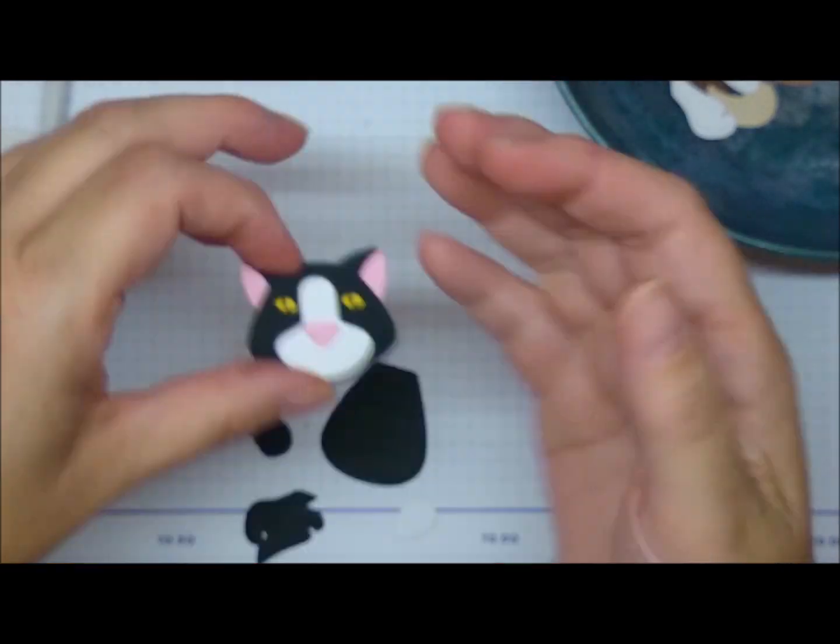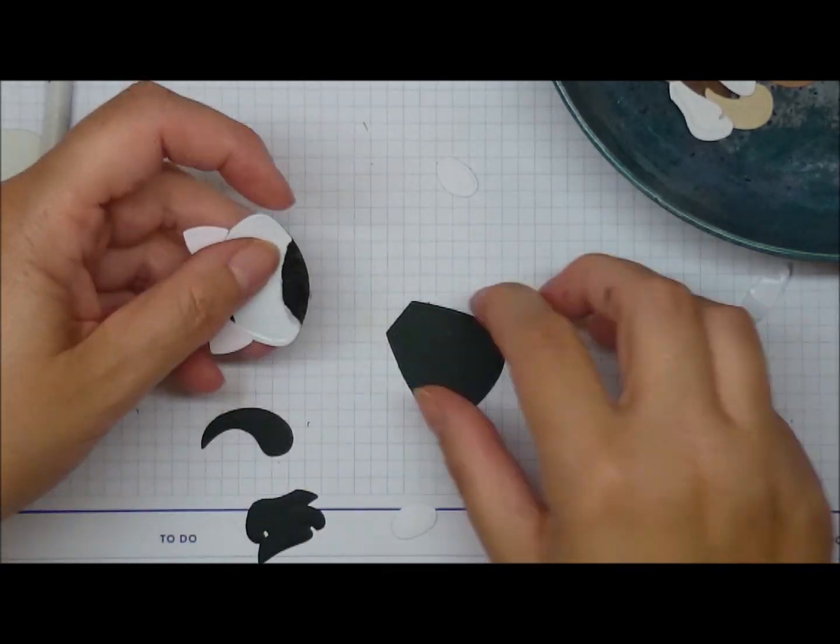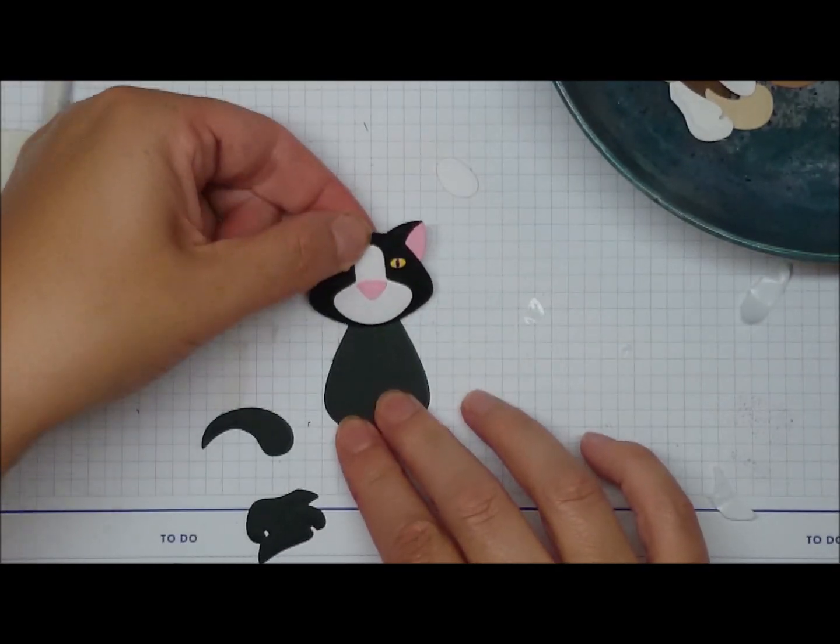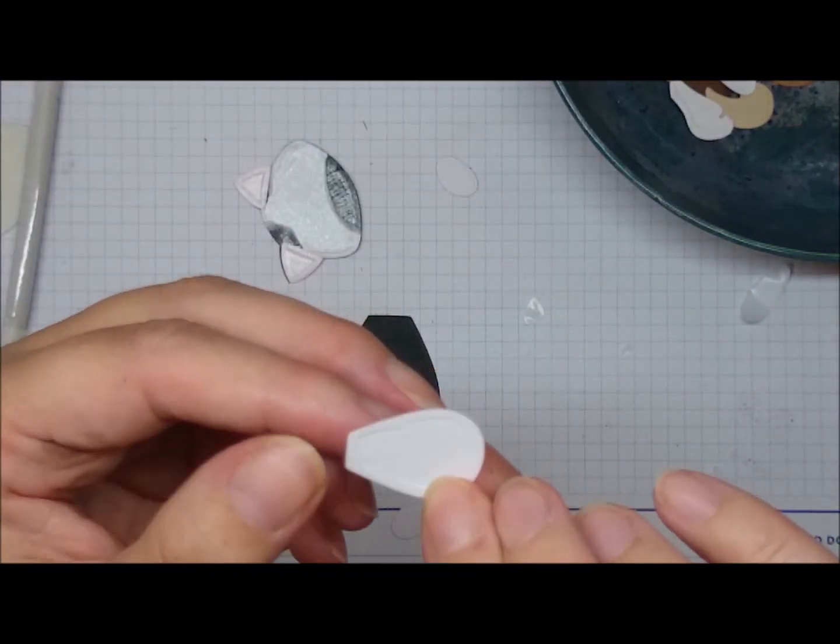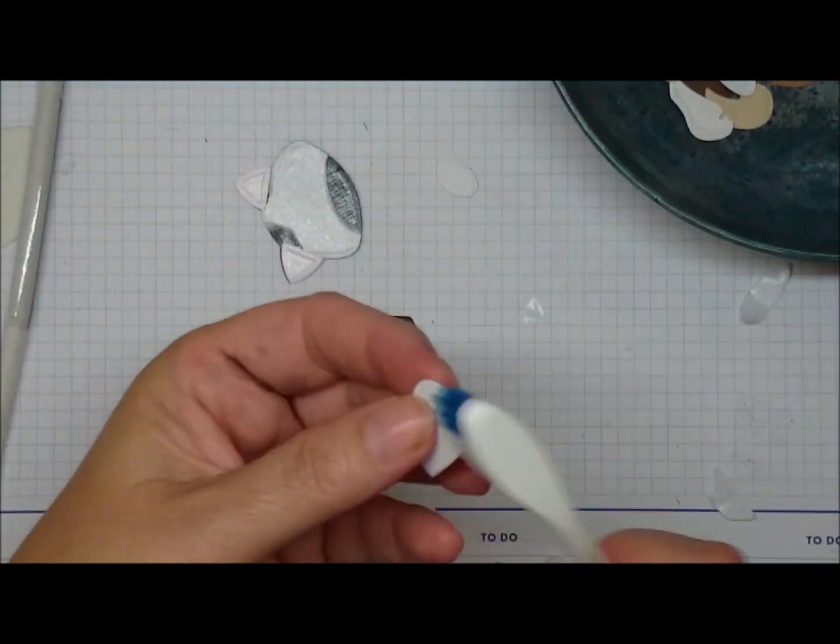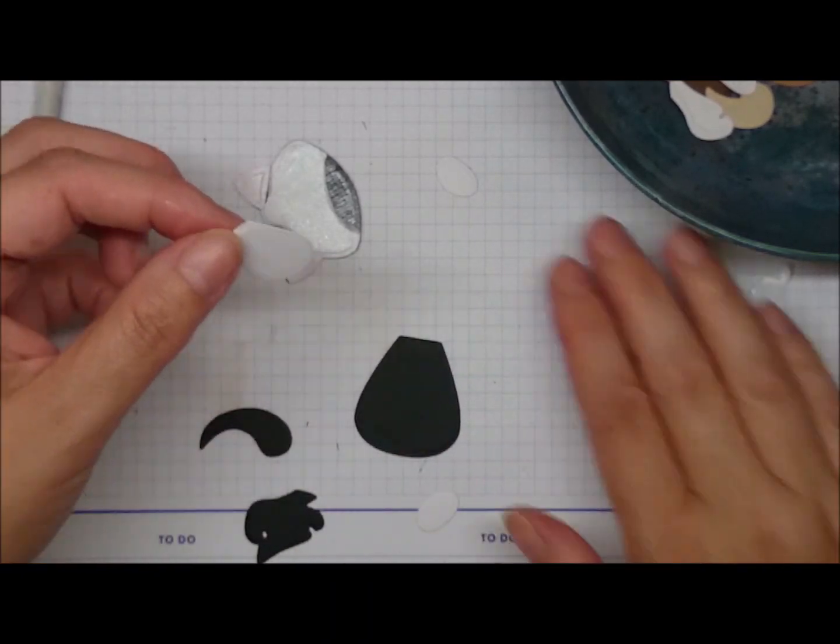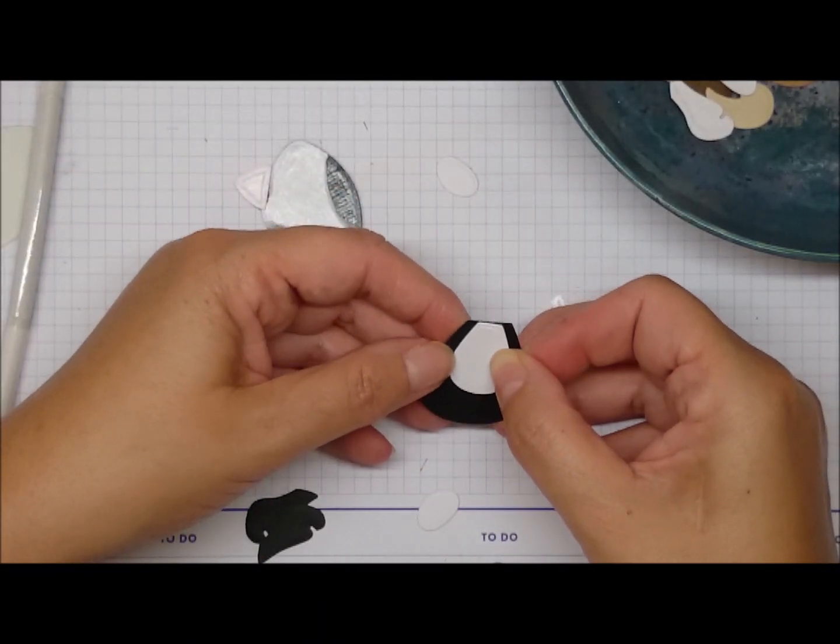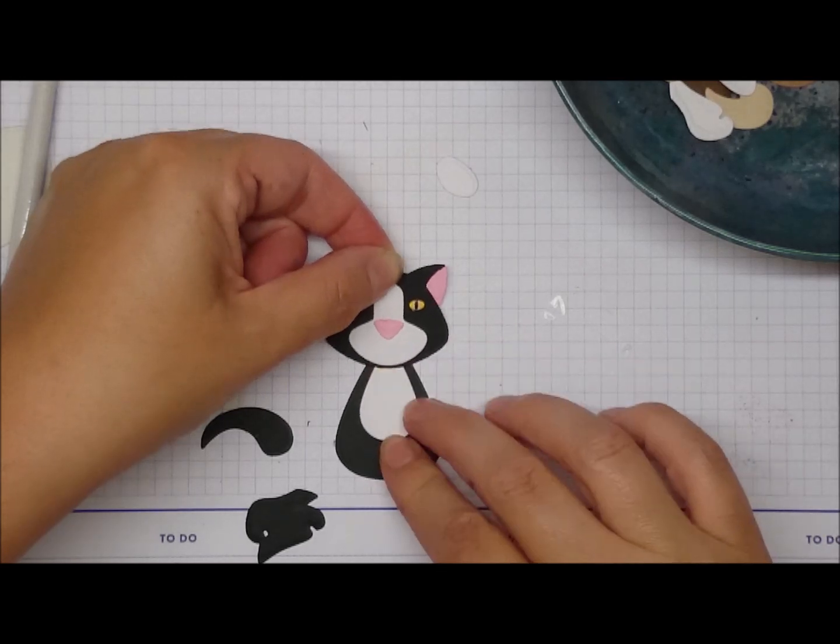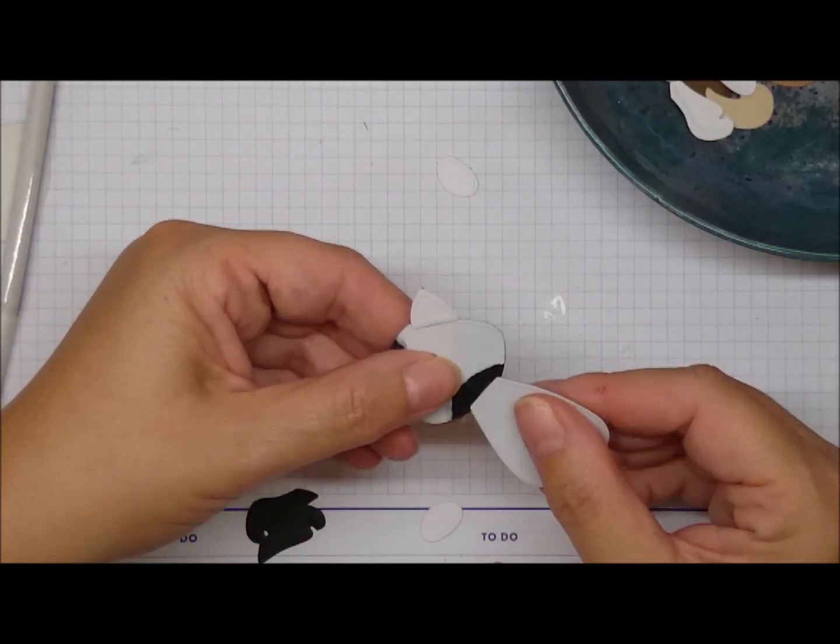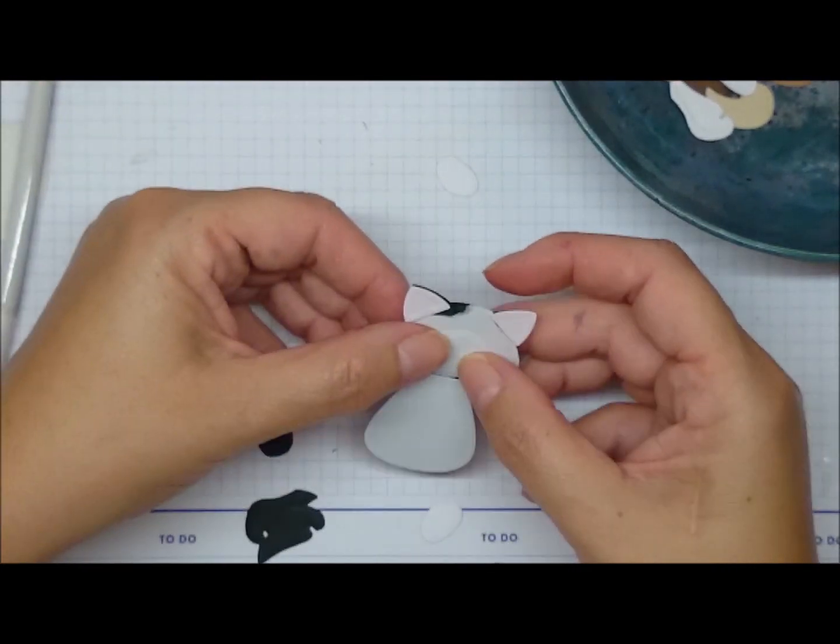He's so really cute. To attach his body I'm just peeling off a little bit of the bottom of his head. I forgot, I die cut it, but I forgot to pull out a little white on the chest.